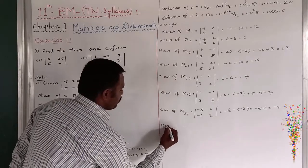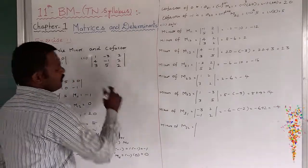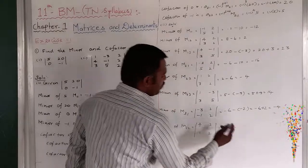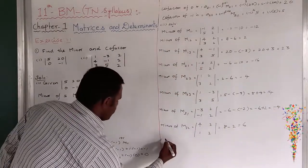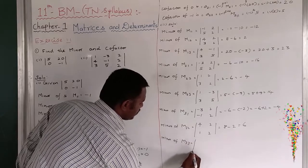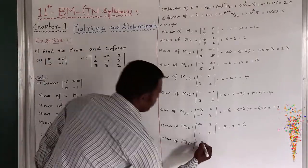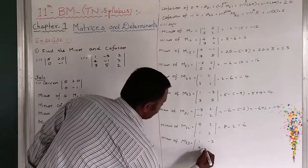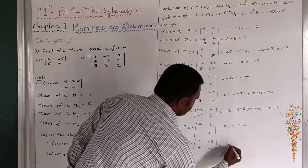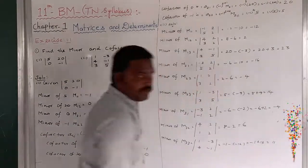Next, minor M32: third row, second column. Remaining is 4, 2, 1, 2. So 4 × 2 = 8, minus 1 × 2 = 2. Therefore 8 minus 2 = 6. And minor M33: third row, third column. The remaining is 1, minus 3, 4, minus 1. Product terms: 1 × minus 1 = minus 1, minus (minus 3 × 4) = plus 12. Therefore minus 1 plus 12 = 11. So all the minors are found.